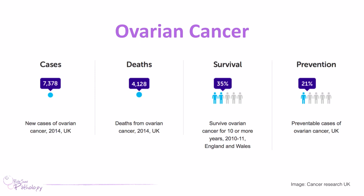Ovarian cancer does not have a fantastic prognosis — survival is only about 35% at 10 years or more, and about 21% of cases are from preventable causes. Ovarian cancer tends to have quite a vague presentation. Patients often present with very non-specific symptoms such as abdominal bloating, abdominal pain, and are often initially misdiagnosed as having IBS. This is because the ovarian mass compresses surrounding tissues, causing a bloated feeling and early satiety.